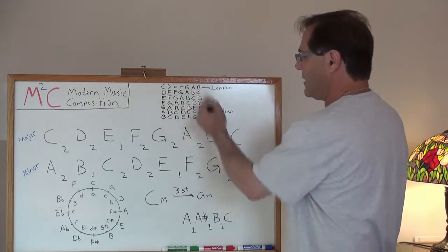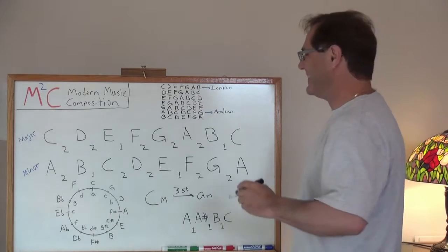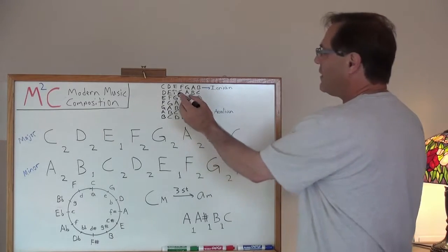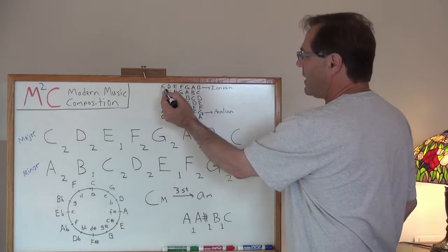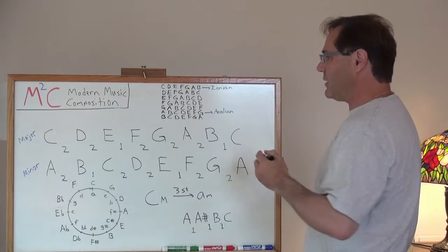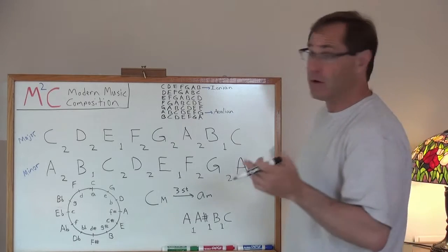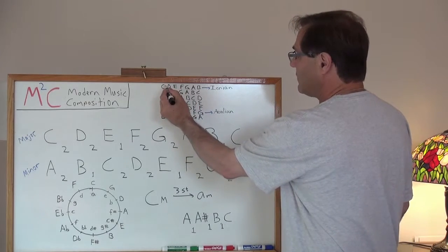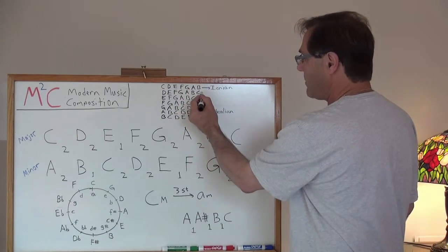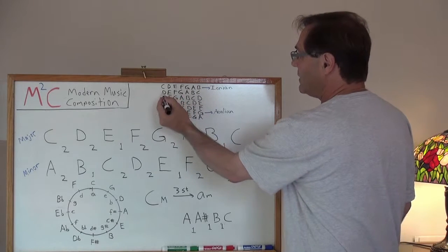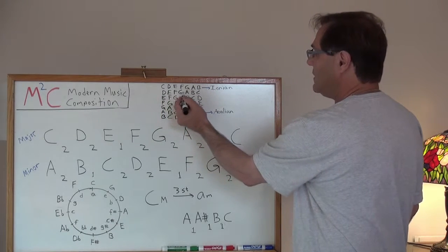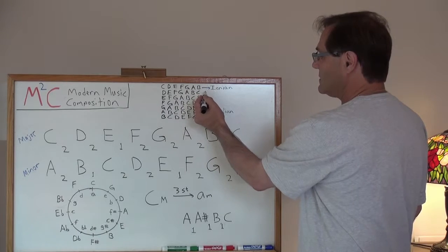If we start with C major, and we call that the Ionian mode. If we want to get to the next mode, which happens to be called the Dorian mode, we just do a first inversion. We take that C and we pop it over to the other side. And lo and behold, we've got the Dorian mode, D-E-F-G-A-B-C.